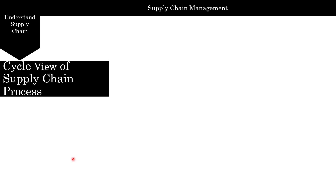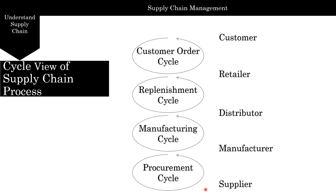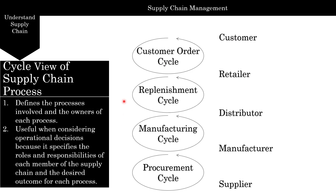In the cycle view, we have the procurement cycle between the supplier and manufacturer, the manufacturing cycle between the manufacturer and distributor, the replenishment cycle between the distributor and retailer, and the customer order cycle between the retailer and the customer. The cycle view defines the processes involved and the owners of each process. It's useful when considering operational decisions because it specifies the roles and responsibilities of each member of the supply chain and the desired outcome for each process.